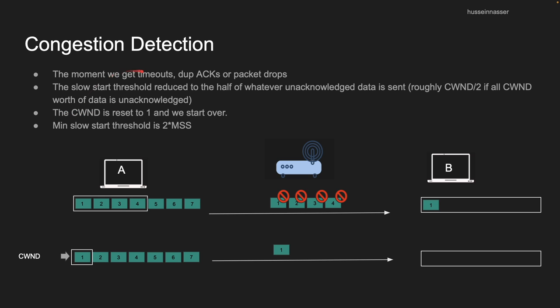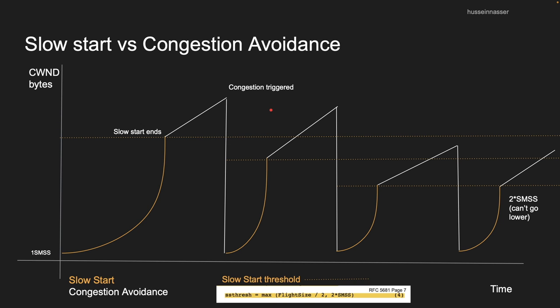The second thing we do after reducing the slow start threshold is reset the congestion window back to one MSS. We essentially start over. But since the congestion window is now less than the threshold, we restart with slow start, which lets us reach the new threshold faster. There is also a minimum slow start threshold of two times the maximum segment size, defined in the RFC — I've highlighted the relevant section and attached it to this lecture.